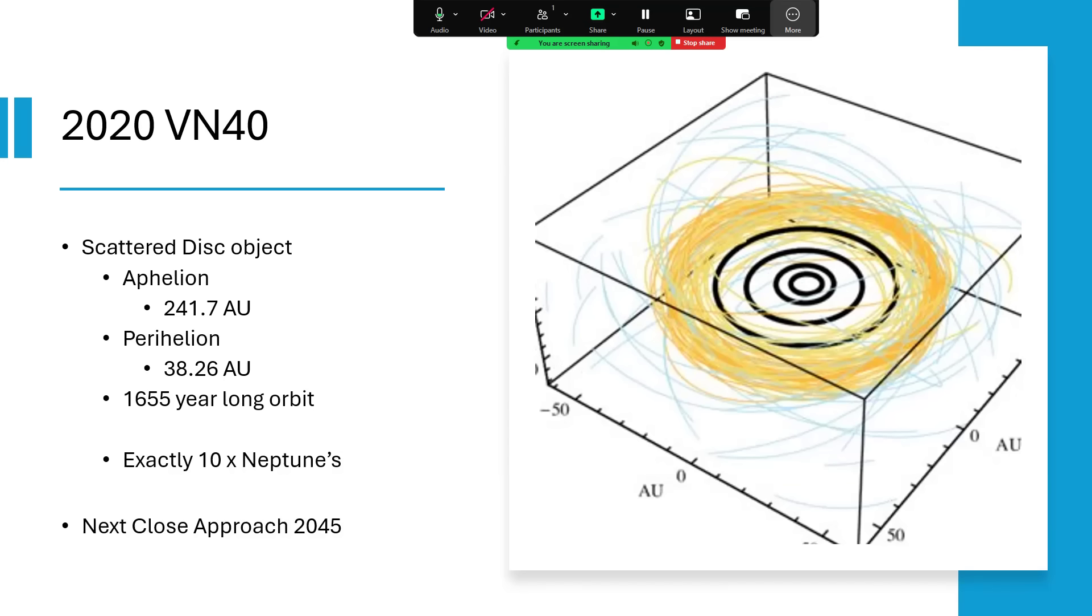In fact, we describe such objects as being scattered disk objects. So beyond the Kuiper belt, the next region is called the scattered disk. And the parameters for this one, at perihelion, 38.26 astronomical units. So that's quite close, but not quite as close as your typical distance for Pluto, and going all the way out to 241.7. So the orbit's known pretty accurately and takes 1,655 years to go around, a very, very long time.